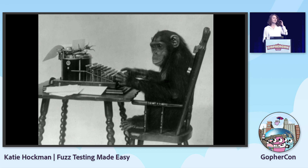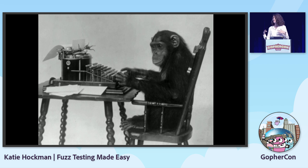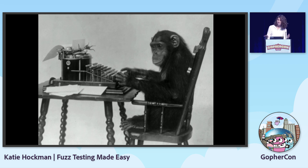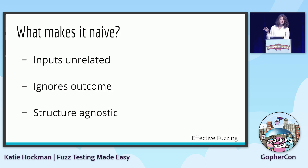One approach a fuzzing engine could take for generating inputs would just be complete randomization. The infinite monkey theorem is the theory that a monkey hitting keys on a keyboard at random would eventually type the entire works of Shakespeare if given enough time — infinity. Well, we don't have infinity to find our bugs. We want to find bugs a little bit faster than that. So let's dive into three issues with a naive fuzzer: it's going to be generating completely unrelated inputs, ignoring the outcome of previous runs, and it's structure agnostic — not paying attention to what kind of data is useful for it to be generating.